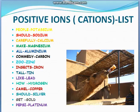P for People = Potassium, S for Should = Sodium, C for Carefully = Calcium, M for Make = Magnesium, A for All = Aluminium, C for Comedy = Carbon, Z for Zoo = Zinc, I for Insects = Iron, T for Tall = Tin, L for Like = Lead, H for How = Hydrogen, C for Camel = Copper, S for Should = Silver, G for Get = Gold, P for Pepsi = Platinum.